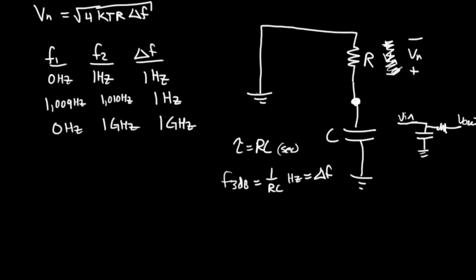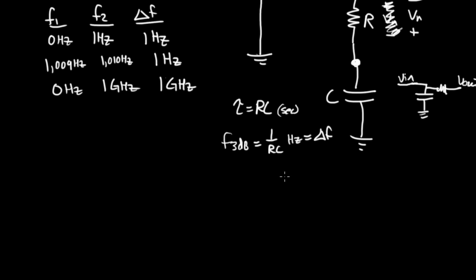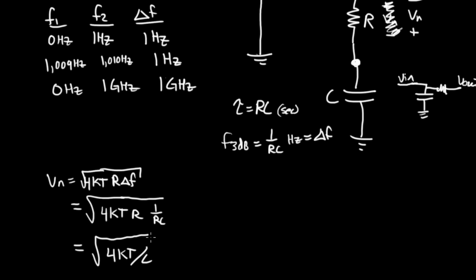Let me scroll down a minute. I'm having a little trouble. Let's clear out a little space. Let's plug it into our expression for voltage noise. Let me rewrite that. Voltage noise equals 4 kT R delta F, which equals 4 kT R. Now, our delta F is 1 over RC. What does this come out to be? Well, the noise voltage is 4 kT over C.